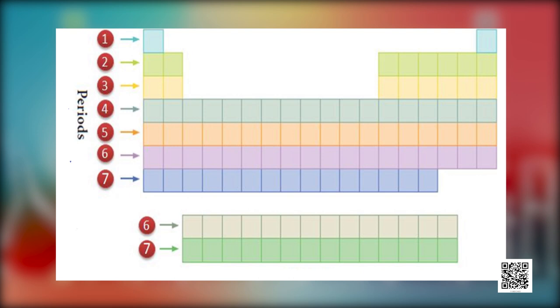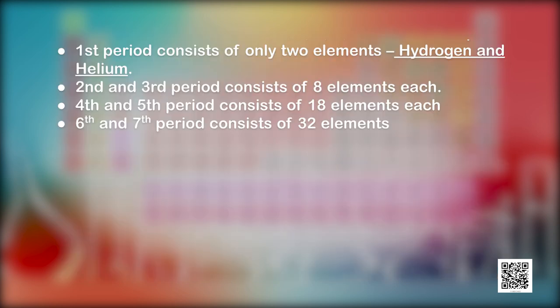There are 7 periods in the periodic table, numbered 1 to 7 from top to bottom. The 1st period consists of only 2 elements — hydrogen and helium. The 2nd and 3rd periods consist of 8 elements each. The 4th and 5th periods consist of 18 elements each. The 6th and 7th periods consist of 32 elements. In the long form of the periodic table, 14 elements of both the 6th and 7th periods are called lanthanoids and actinoids respectively, and they are placed in separate panels at the bottom.